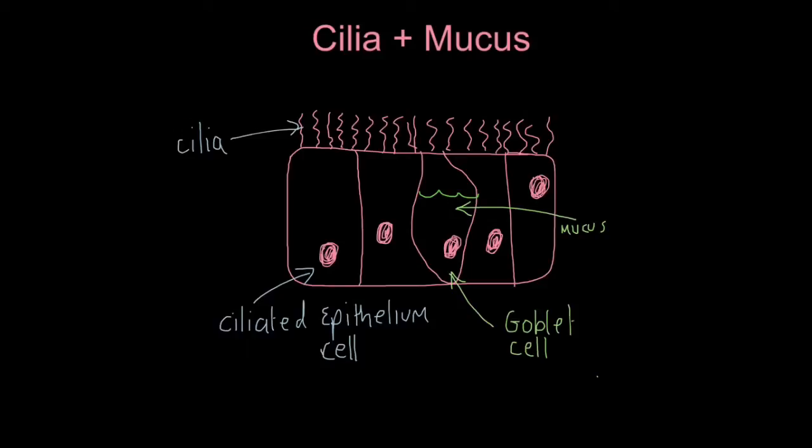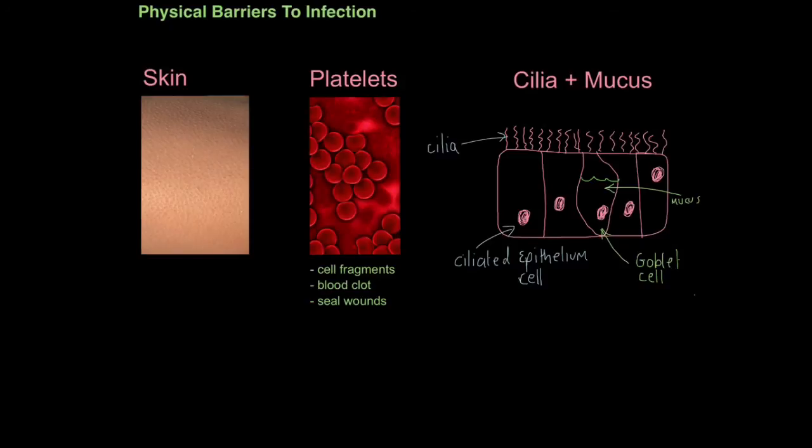Imagine you just breathe in, and you're flooding your respiratory tract with pathogens everywhere. These pathogens get stuck in these cilia because the goblet cells secrete this mucus. The mucus traps these bacteria, and then the cilia start to sweep this bacteria up towards our mouth where we swallow them. The bacteria then get into our stomach where the stomach acid destroys them.